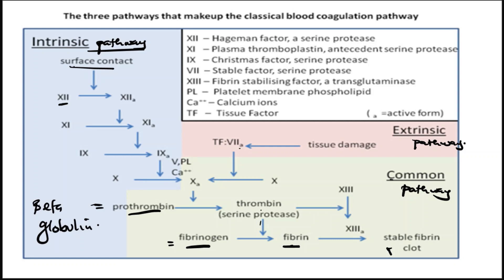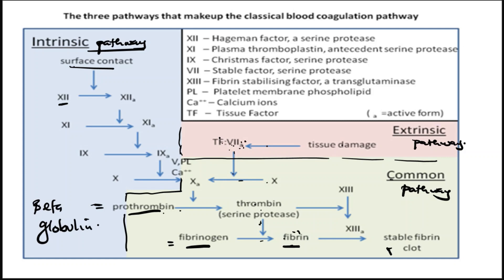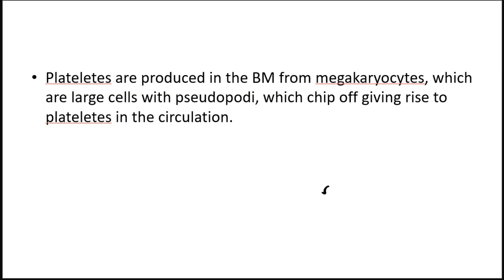That is the common pathway. In the extrinsic pathway, tissue damage causes tissue factor to convert factor VII to activated factor VII. Activated factor VII converts factor X to activated factor X, which converts prothrombin into thrombin. Thrombin activates fibrinogen into fibrin, and fibrin together with activated factor XIII (fibrin stabilizing factor) forms a stable clot, blocking the damaged blood vessel and stopping bleeding.